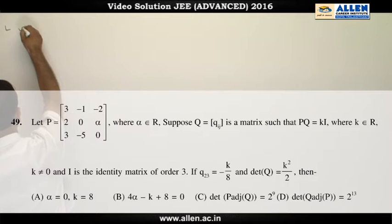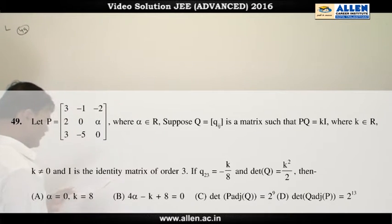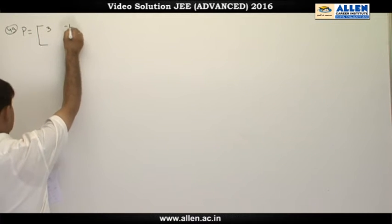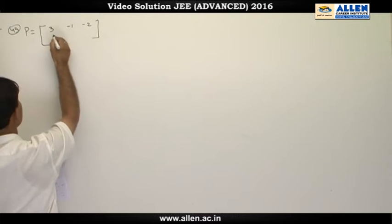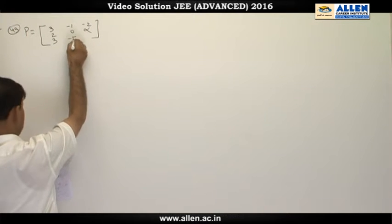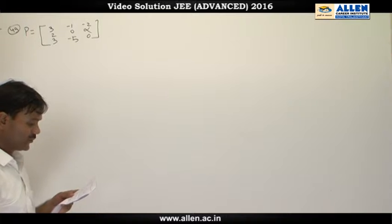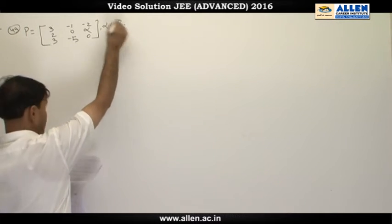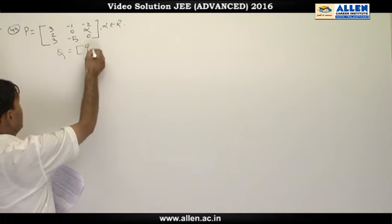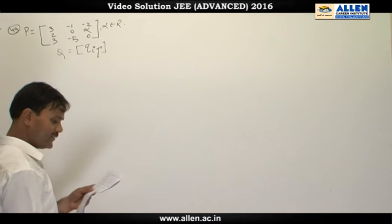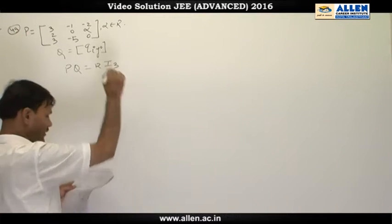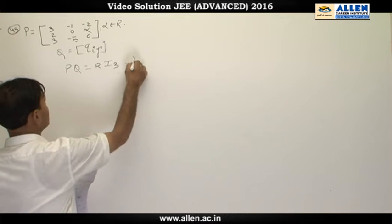In question number 49, we are given a matrix P with elements: first row (3, -1, -2), second row (2, 0, α), third row (3, -5, 0), where α is some real number. There is another matrix Q given in short form as Q_ij, such that PQ equals k times the identity matrix of order 3, where k is not equal to zero.